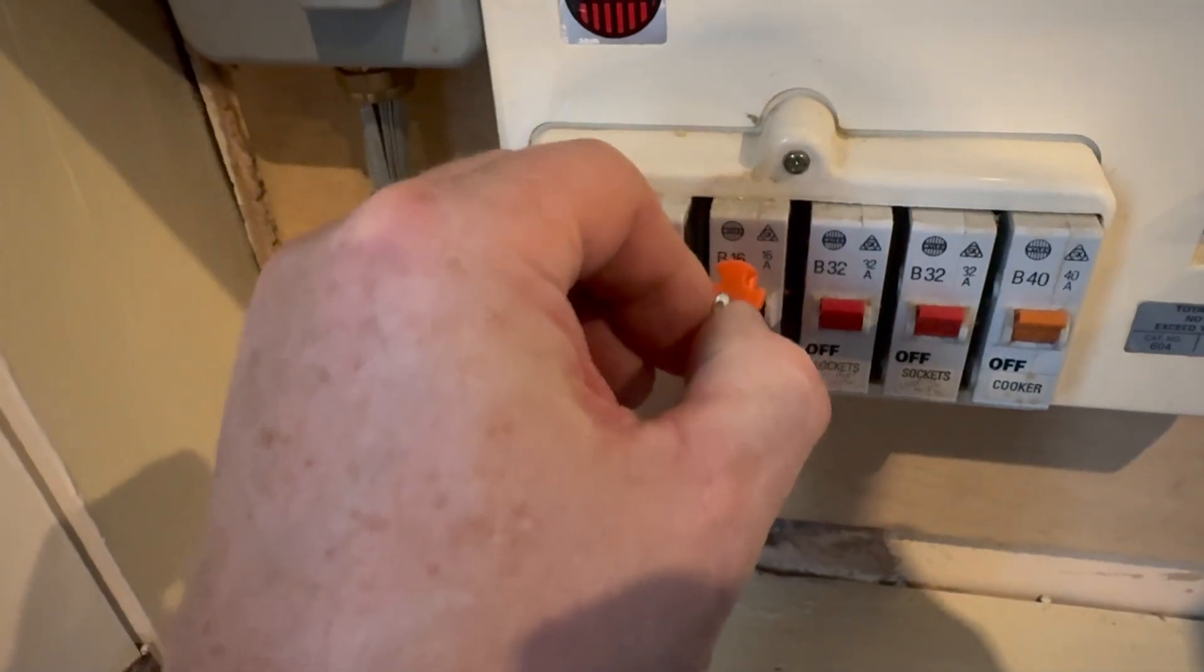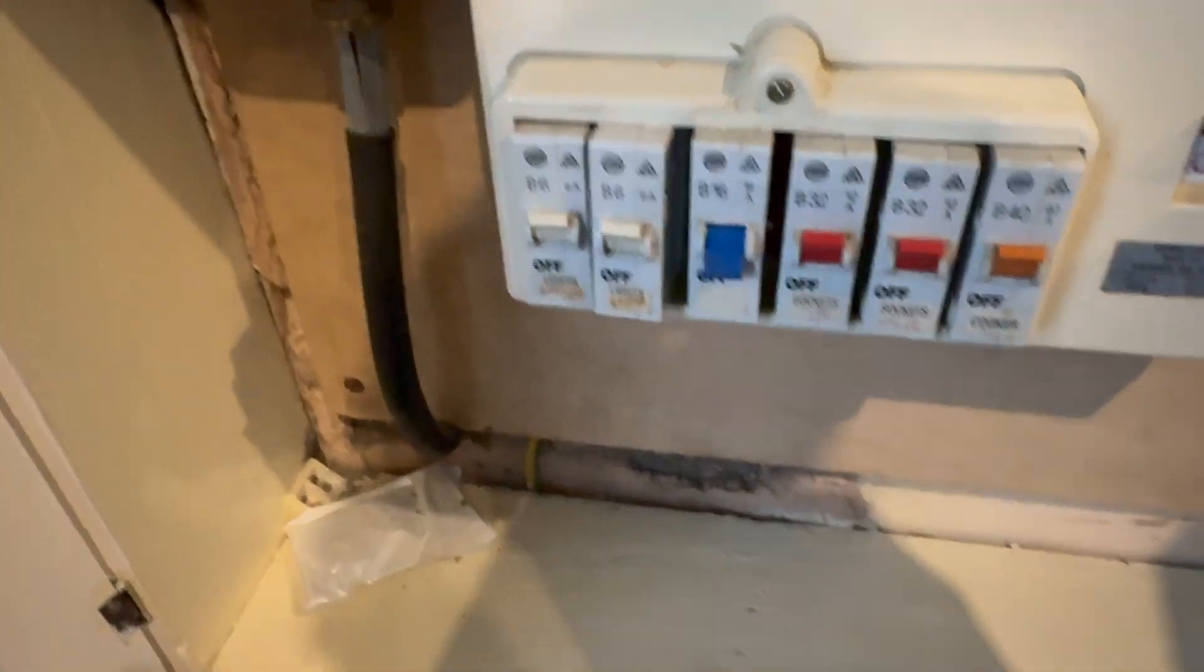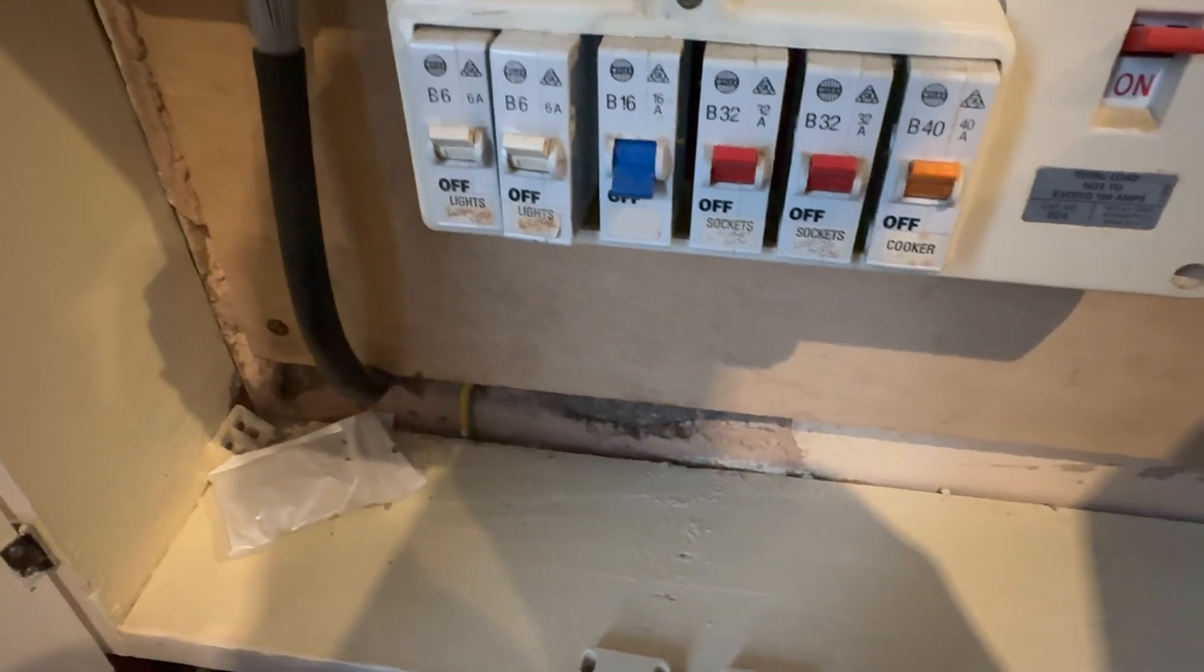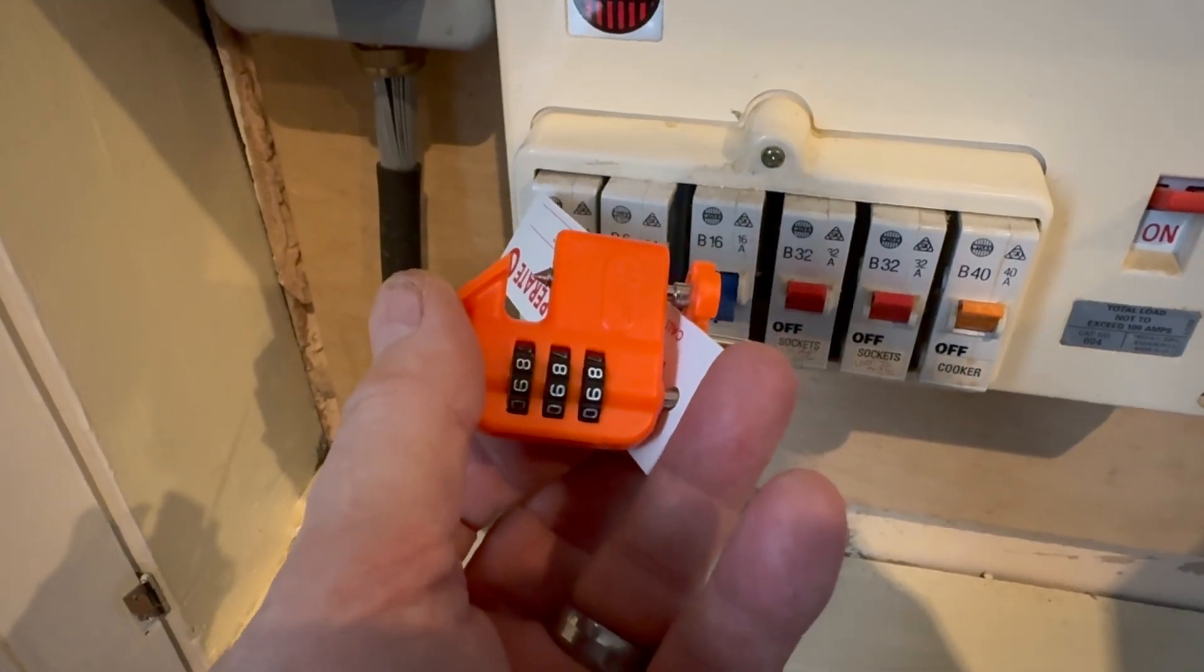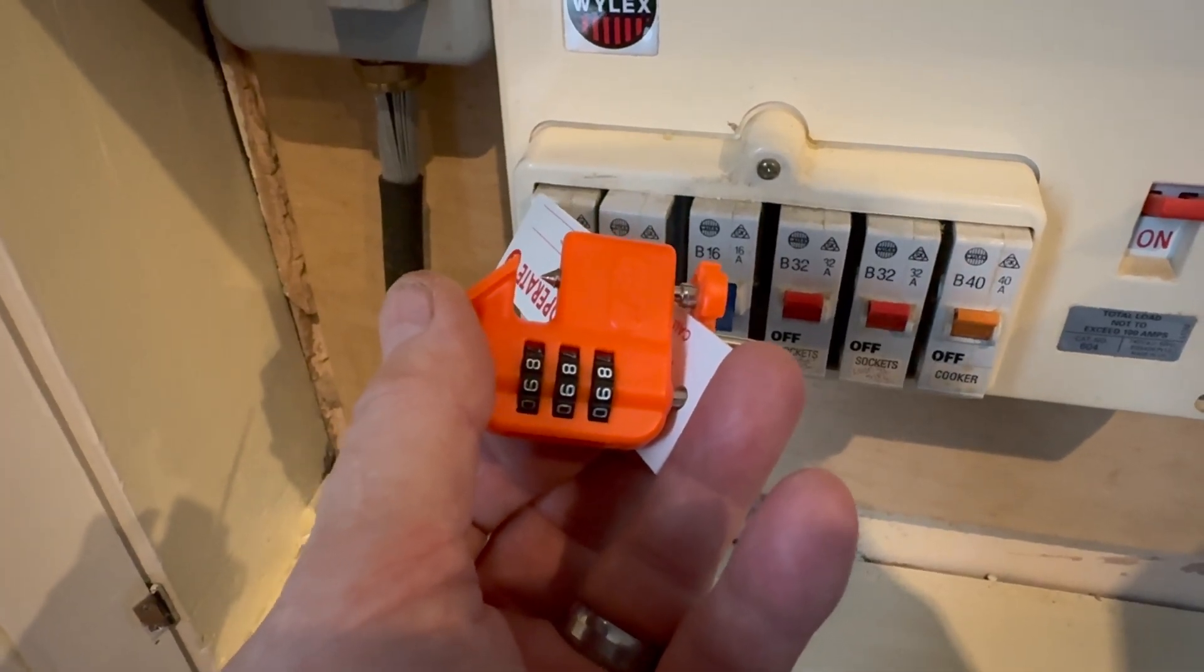Then once you put the numbers in line, pull this up, unscrew this, and it drops on the floor. So that's how the MCB or the miniature circuit breaker lock-off kit works.